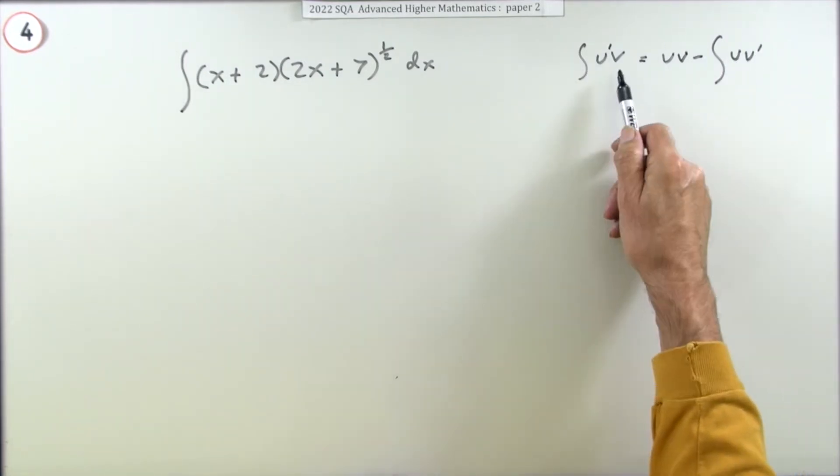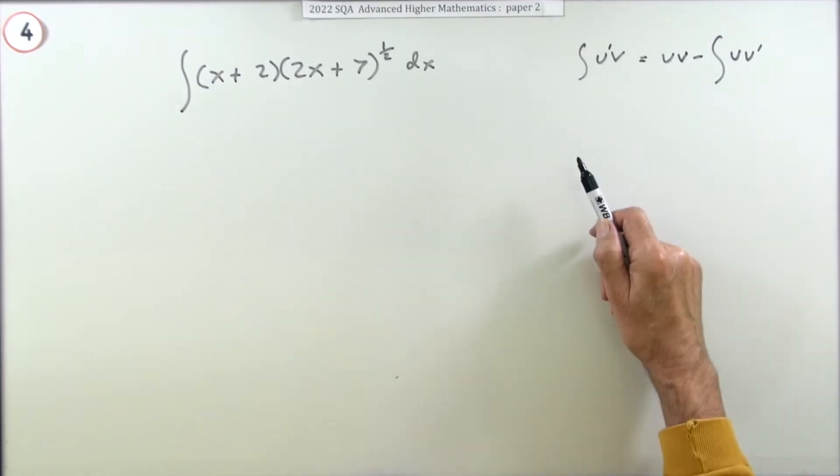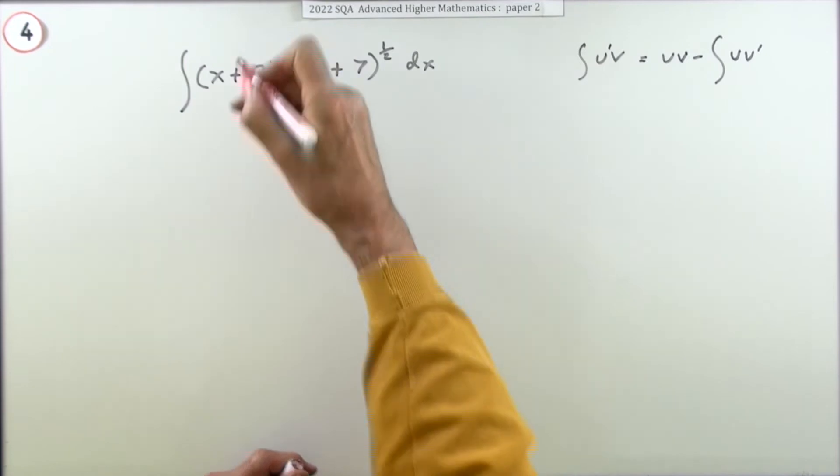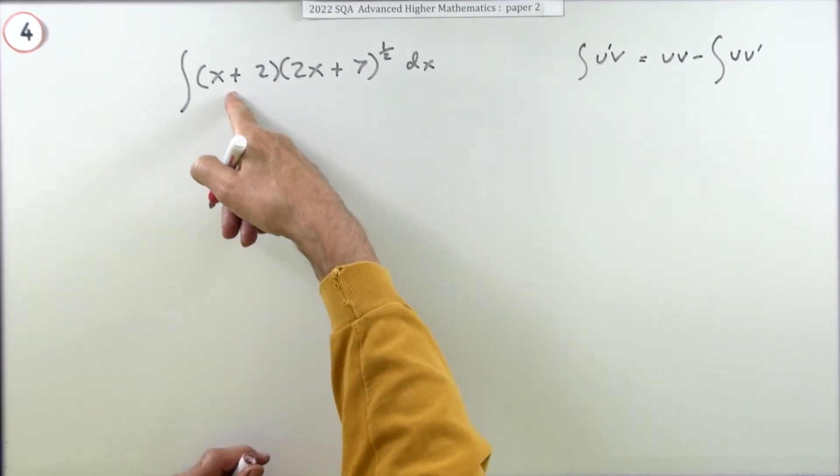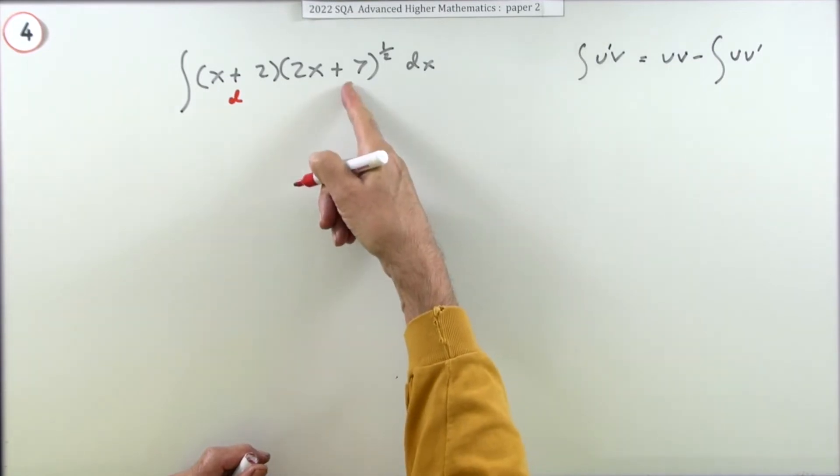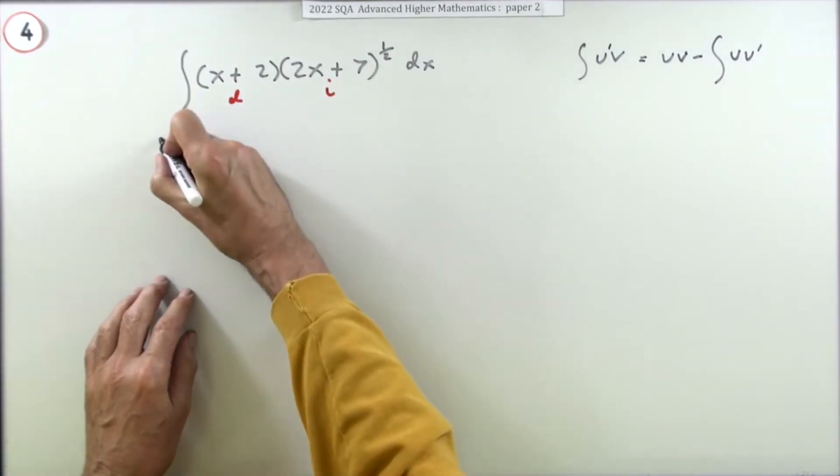So really the first thing you're doing is you're looking for something you can whittle down that will produce a simpler integration. Well, if you differentiate this, that'll just disappear into a one. So rather than writing that down, I'll just do my identification first. I can differentiate that because that will whittle it down, and I can integrate that.